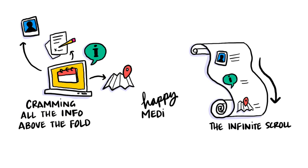Aim to find a happy medium between the two, using effective design elements that urge your attendees to want to explore more about your event. Some effective design elements include literally an arrow that just points below the fold.